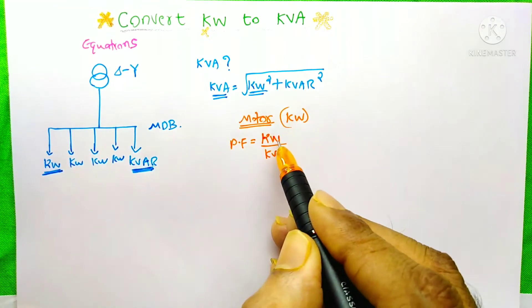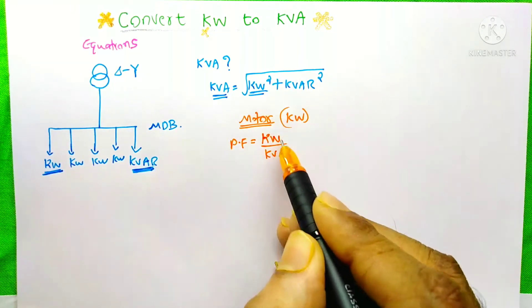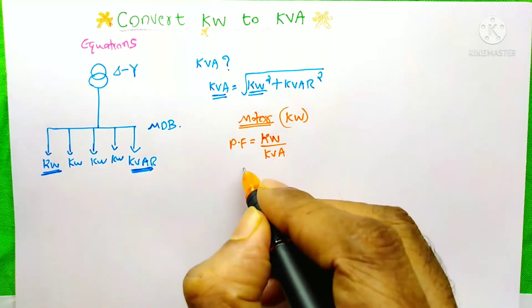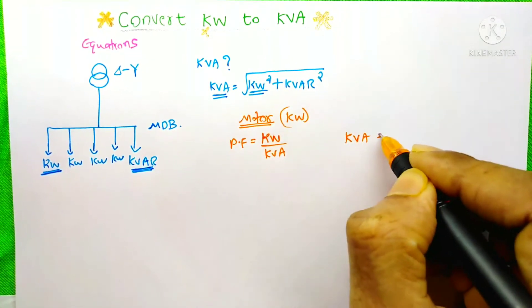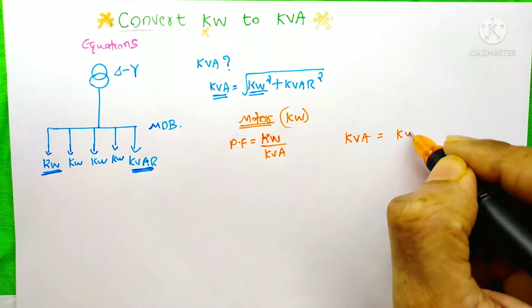Power factor equals kW by kVA. That means real power by apparent power. From this, we can find the kVA as kVA equals kW by power factor.